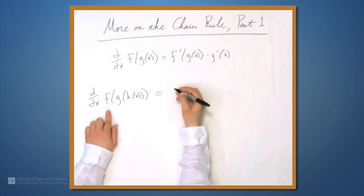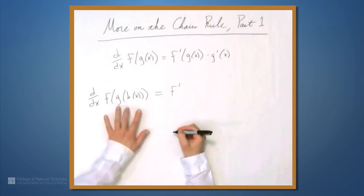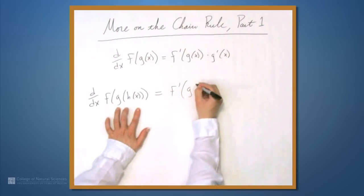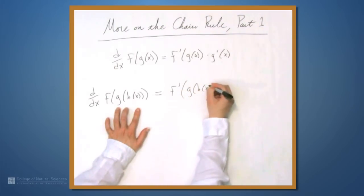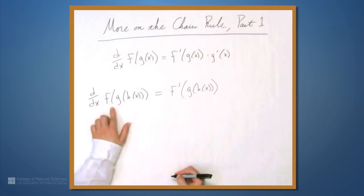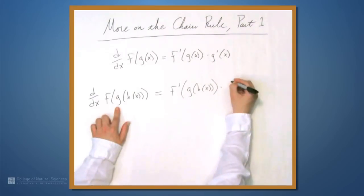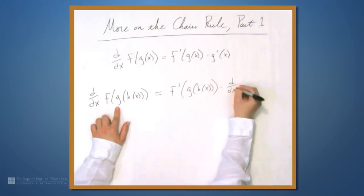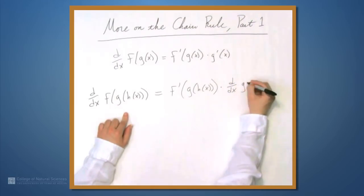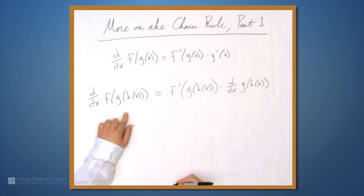The first thing the chain rule tells us is we take f' and we evaluate it at whatever's inside, which is g of h of x. And then we multiply that by the derivative of what's inside. For now, let's just write the derivative of g of h of x.